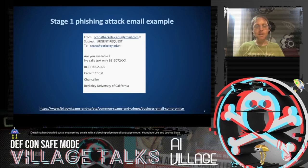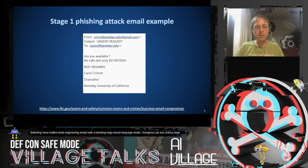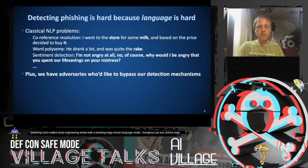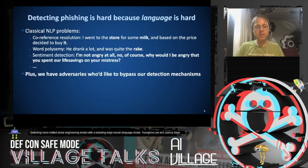Here's an example phishing email sent in the later stage of the grooming stage of an attacker's workflow. The attacker has established themselves as an impersonated chancellor of UC Berkeley. They are emailing an employee at UC Berkeley, asking if they're available, looking to exchange messages with them, probably about to make an ask around a money transfer.